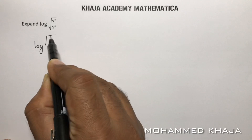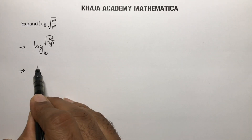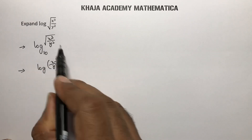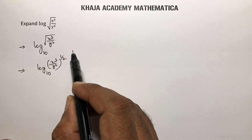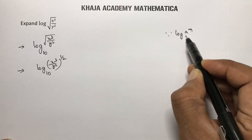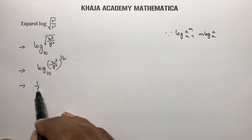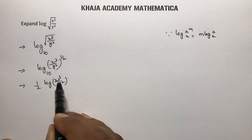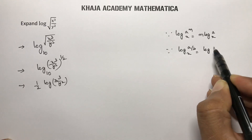Expand log of the square root of (x³ / y²). You can take base 10. The square root is written as a power of 1/2, so this becomes log(x³/y²) to the power 1/2, to the base 10. Applying the power rule, you get 1/2 · log(x³/y²). Now applying the quotient rule: log(a/b) to base x is log a minus log b, giving 1/2 · (log x³ minus log y²).